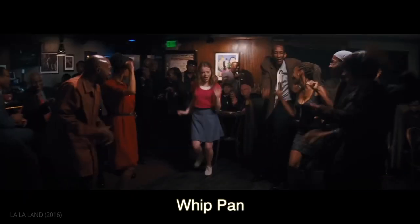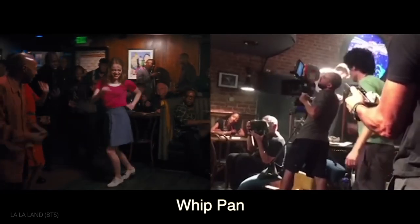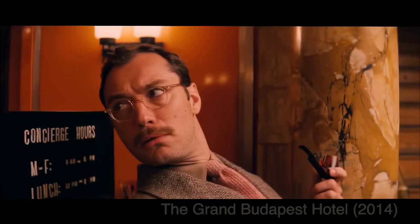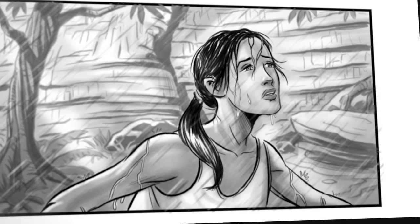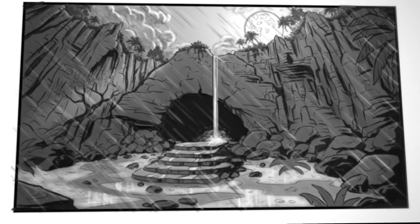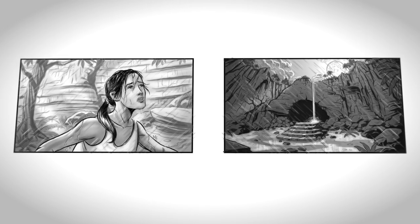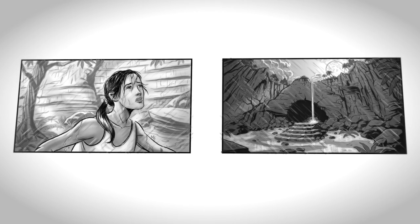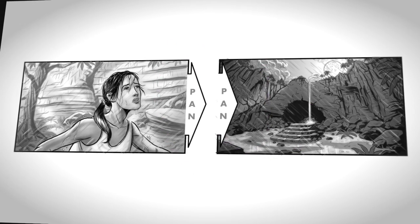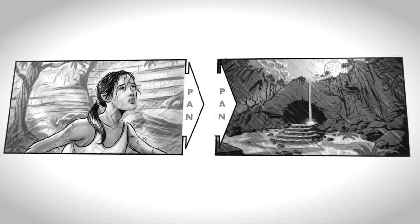There's also a movement called the whip pan, which is essentially a super fast pan, often used for comedic effect by directors like Wes Anderson. In our storyboard, the camera slowly pans right to reveal the ominous opening to the cavern. I indicate a pan between two continuous frames by placing a large arrow pointing in the direction of the pan on each frame, and I include the word 'pan' within the arrows so there's no confusion.